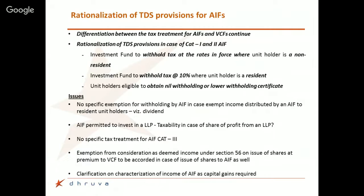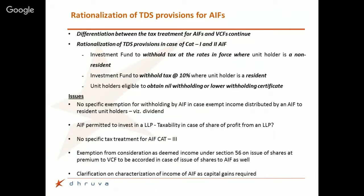There is also some rationalization of TDS provisions for AIF category 1 and 2. The erstwhile provisions mandated withholding tax at a flat 10% when distribution is made or credited to a non-resident investor. The new provisions suggest that instead of a flat 10%, TDS would be deducted at the rates in force — meaning you look at each non-resident investor's position separately and apply applicable tax treaty benefits when determining the withholding rate.